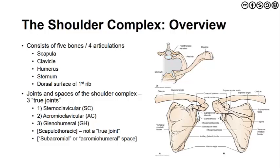Within those structures, there are three joints. The first is the sternoclavicular joint — the more proximal midline articulation between the proximal end of the clavicle and the sternum. Then we have the acromioclavicular joint, the distal end of the clavicle as it articulates with the acromion process of the scapula. And finally, the glenohumeral joint, made up of the glenoid fossa of the scapula articulating with the proximal humeral head. There are also pseudo joints: the scapulothoracic joint, which lacks an articular space and articular cartilage, and the acromiohumeral or subacromial space that lies just inferior to the acromion process but superior to the proximal head of the humerus.